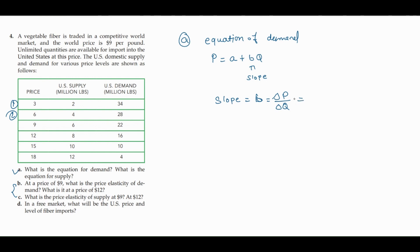What is the change in price? If you see, price has increased from 3 to 6, so we write 6 minus 3. For change in quantity demanded — since we are using only demand data — demand has fallen from 34 to 28, so we write 28 minus 34. You will get 3 divided by negative 6, which gives slope equals negative 1/2.